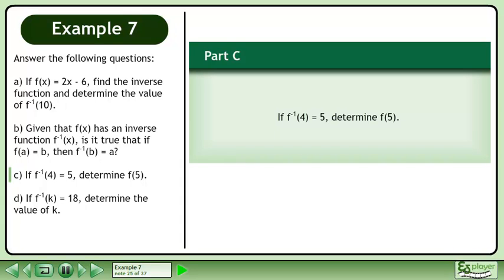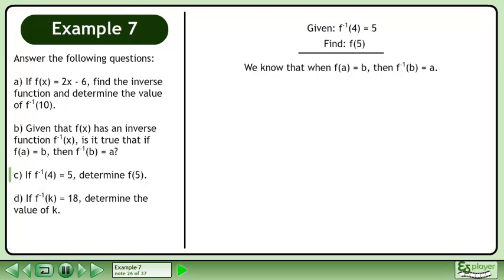Now we'll move on to part c. If f inverse at 4 equals 5, determine f at 5. We know that when f at a equals b, then f inverse at b equals a.